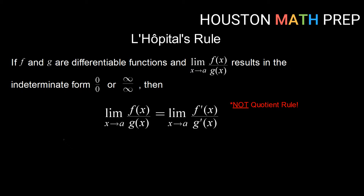L'Hôpital's rule says if we have two differentiable functions f and g, and if we try to take the limit as x goes to a of f(x) over g(x) and that results in either of the indeterminate forms 0/0 or positive or negative infinity over positive or negative infinity, then that original limit is equal to the limit as x goes to a of f′ over g′ — the derivative of the top over the derivative of the bottom. It's really important to note this is not the same as the quotient rule. We are not taking the derivative of the quantity f(x)/g(x); we are taking the derivative of the numerator independently of the derivative of the denominator.